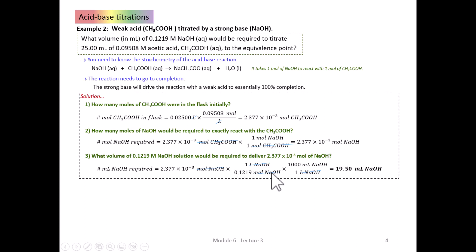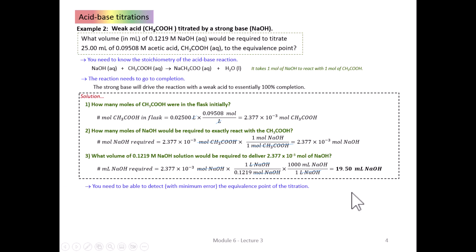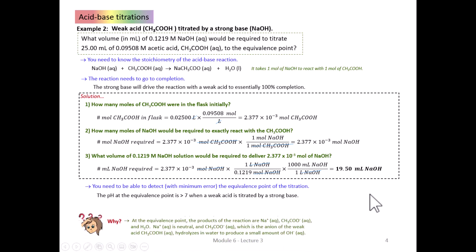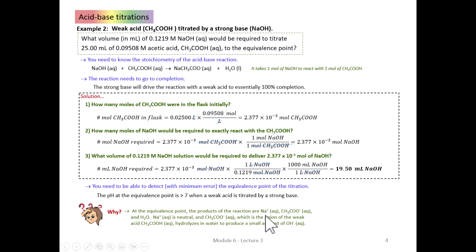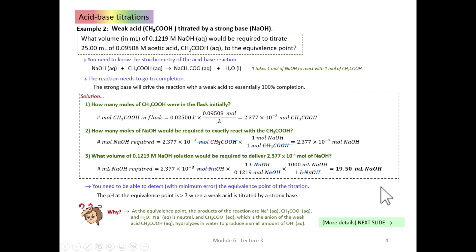The volume of sodium hydroxide solution needed from the burette is calculated by dividing the moles of NaOH required by its concentration. The moles of sodium hydroxide cancel, leaving liters of sodium hydroxide solution, which converts to 19.5 milliliters. Remember, the third requirement is to detect the equivalence point, which means having a handle on the expected pH. When titrating a weak acid with a strong base, the pH at the equivalence point is not 7 — it's greater than 7.